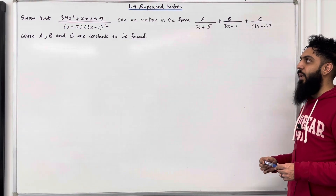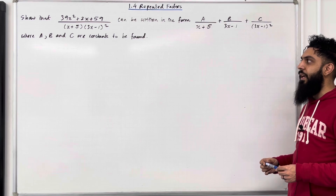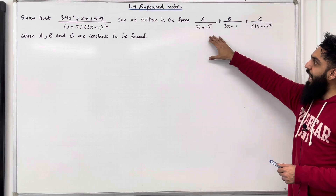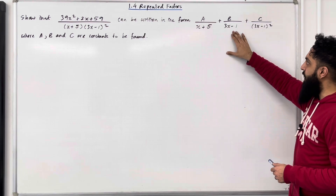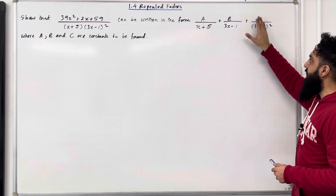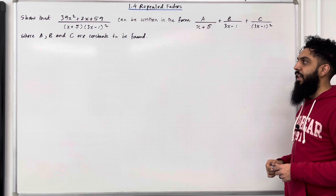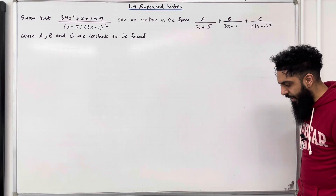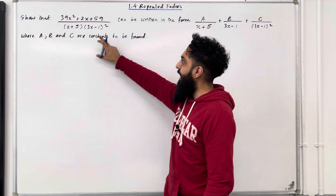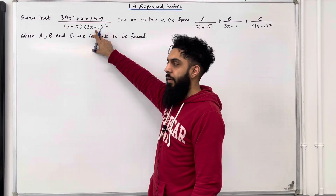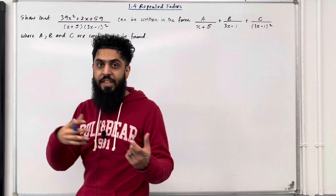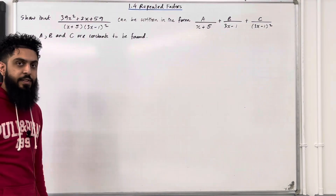Show that (39x² + 2x + 59) all over (x + 5)(3x − 1)² can be written in the form A/(x + 5) + B/(3x − 1) + C/(3x − 1)², where A, B and C are constants to be found. We notice that (3x − 1) is a repeated factor because we have (3x − 1) squared — hence why this video is called repeated factors.